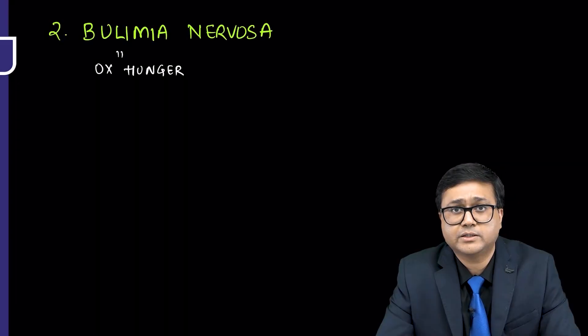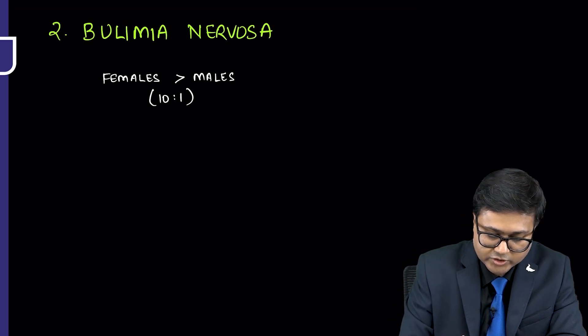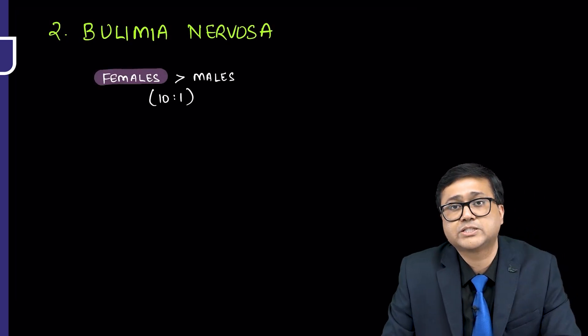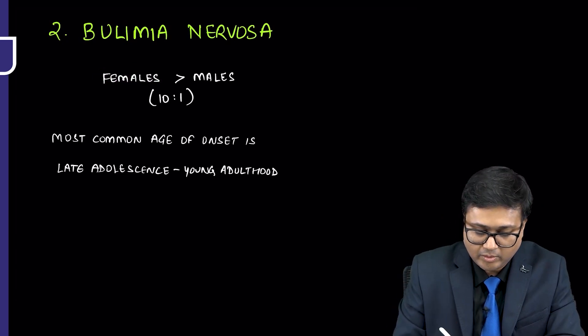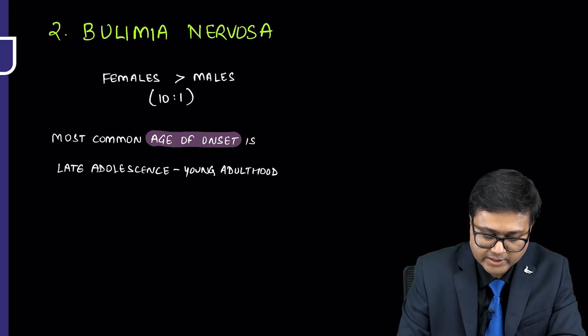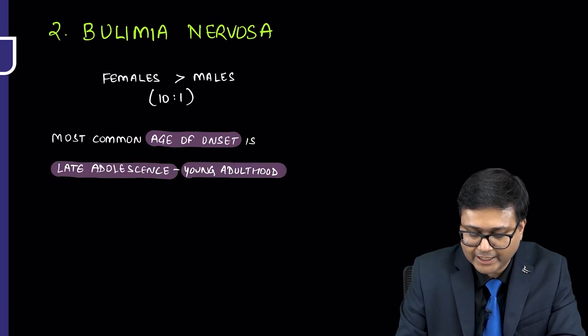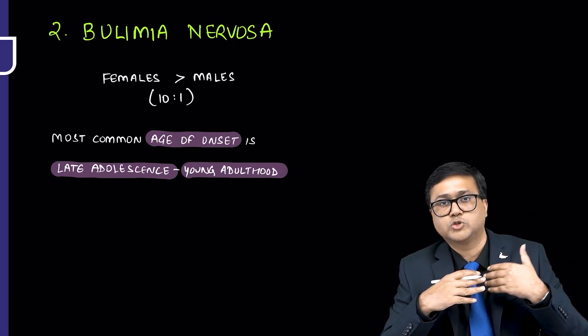Bulimia is derived from Greek word meaning ox hunger. Bulimia nervosa is more common in females than males. The ratio is nearly 10 is to 1.